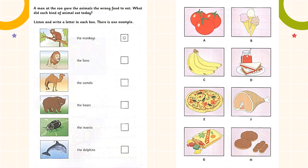And the lions looked happy too. He gave them jam sandwiches! They don't usually like that — they like to eat meat. He doesn't know anything about animals; he can't do the job. He's going to work in the cafe tomorrow. It's better for him to work there.